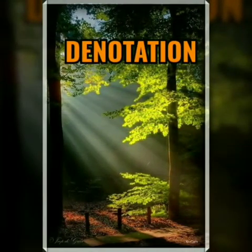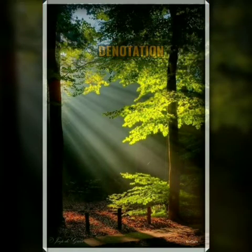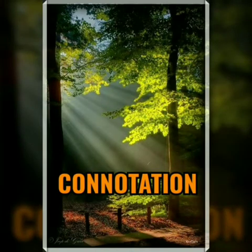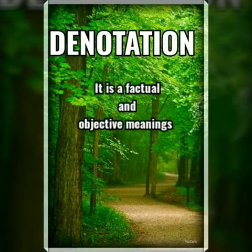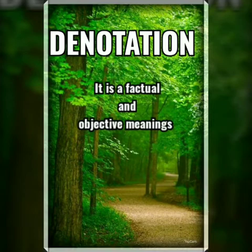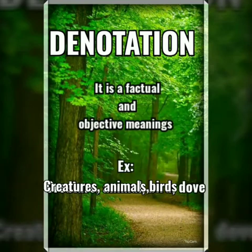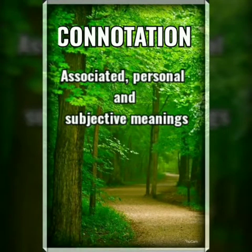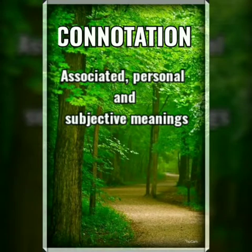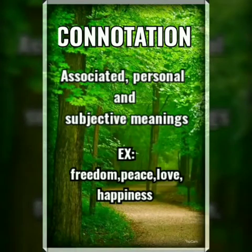Semantics, semantic level 2: denotation and connotation. What is denotation? It is a factual and objective meaning. What is connotation? It is associated, personal and subjective meaning. For example: freedom, peace, love, happiness.